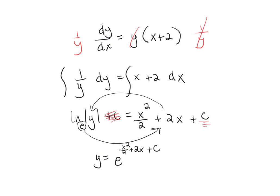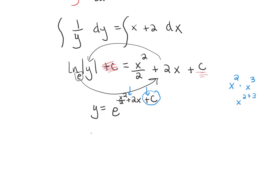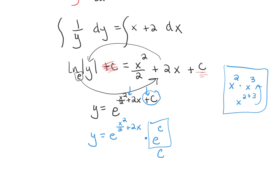That is technically correct, but I want to show you another form you may see in multiple choice. Recall from algebra that x squared times x to the third equals x to the 2 plus 3 — when you multiply same bases you add exponents. So we can rewrite y as e to the x squared over 2 plus 2x, times e to the c. Since e to the c is just a constant, the answer is commonly written as y equals c times e to the power of x squared over 2 plus 2x.